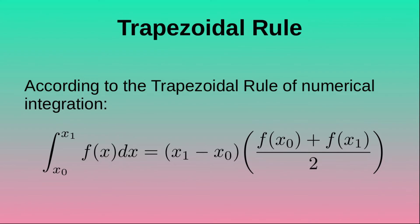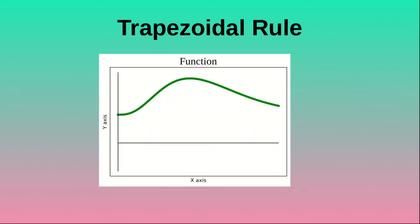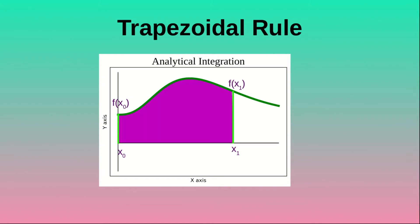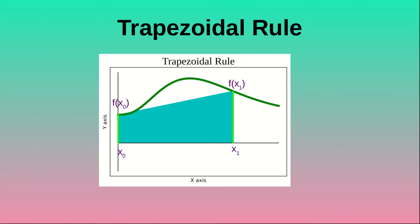Now let's try to understand this with the help of an example. Suppose we have a function something like this. Here suppose this is our x0, so this will be our f(x0), and this is our x1, so this will be our f(x1). If we perform the integration analytically then we will be evaluating this violet area. Now if we perform the same integration with the help of the trapezoidal rule, we will be evaluating this blue area. This blue area is a trapezoid, hence the name trapezoidal rule of numerical integration.